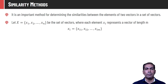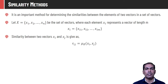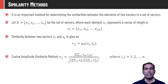Let capital X be the set of vectors x1, x2, up to x_n, where each element x_i in capital X is a vector of dimension m, represented as (x_i1, x_i2, x_i3, ..., x_im). So capital X is a matrix of size n×m, where it contains n vectors each of dimension m. The similarity score between two vectors x_i and x_j is given by r_ij = μ_R(x_i, x_j). This is a very generalized formula using the cosine similarity measure.